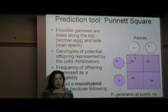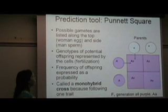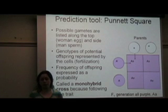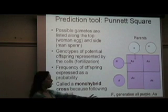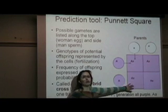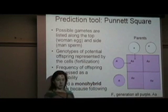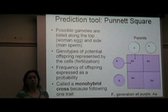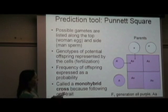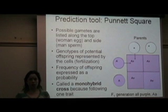A heterozygous flower is going to be purple as well. We can then express the frequency of the offspring as a probability or percentage. We can say that 4 out of 4 offspring are purple or 100% of the offspring are purple. You can also talk about them genotypically and say that they are all heterozygous. This is an example of a monohybrid cross because we are following one single trait. You have to do some Punnett squares for your homework, so let's go through some examples.